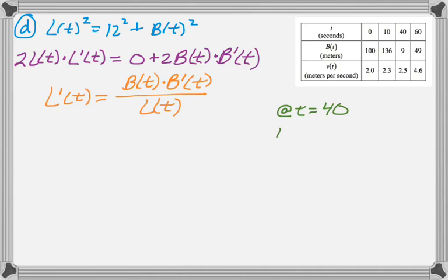So at T equals 40, L(t) squared equals 12 squared, and then the value of B(t) at 40 is just 9. You can read it from the table. So that's plus 9 squared. That's just a scaled-up 3, 4, 5 right triangle, right? 9 squared plus 12 squared equals 15 squared. So L(40) is 15.